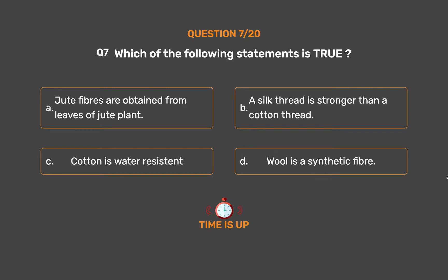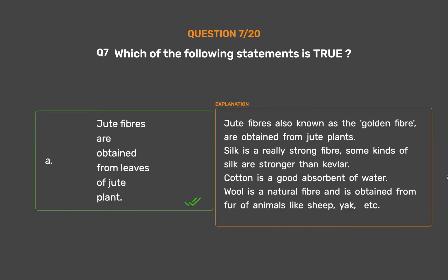The correct answer is Option A, Jute fibers are obtained from the leaves of the jute plant. Jute fibers, also known as the golden fiber, are obtained from jute plants. Silk is a really strong fiber — some kinds of silk are stronger than Kevlar. Cotton is a good absorbent of water. Wool is a natural fiber obtained from the fur of animals like sheep and yak.